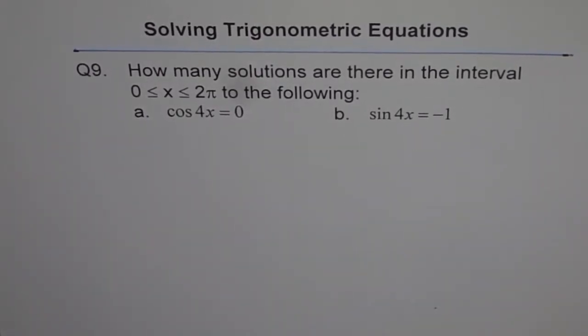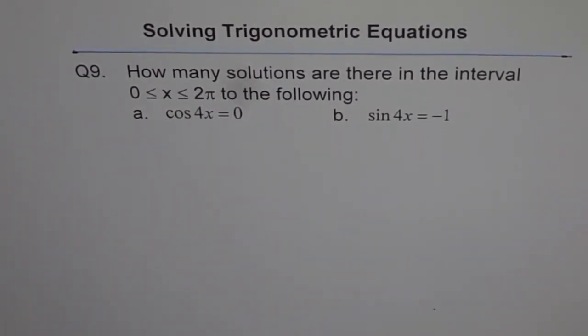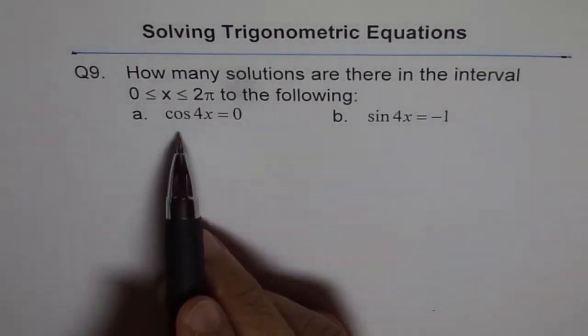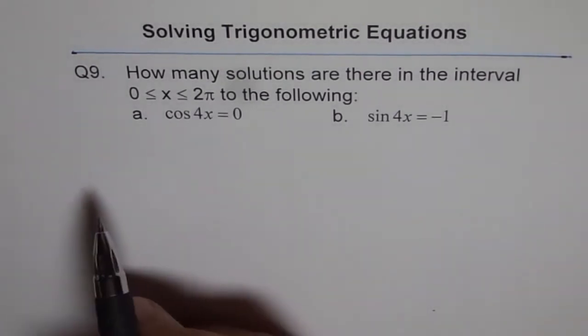Solving trigonometric equations, question 9. How many solutions are there in the interval of 0 to 2π to the following? So first one is cos 4x equals to 0.